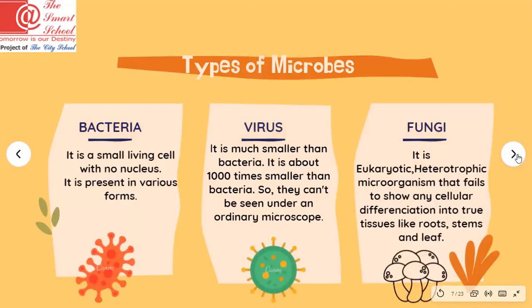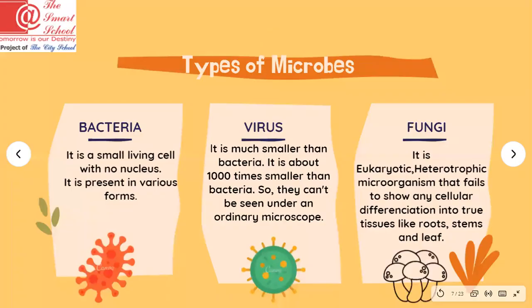Dear students, there are three types of microbes. Number one is bacteria — bacteria are small living cells without a true nucleus, present in various forms. Number two is virus — viruses are much smaller than bacteria, about 1000 times smaller, so they cannot be seen under an ordinary microscope; you must use an electron microscope or a compound microscope to see them. Number three is fungi — fungi are eukaryotic heterotrophic microorganisms that fail to show any cellular differentiation into true tissues like roots, stem, or leaf.